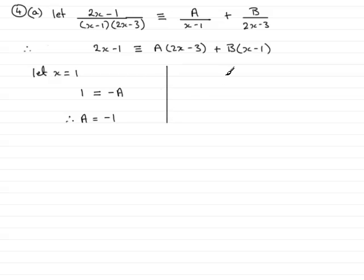We now want to find out what B is, and we can do that by making this bracket go to 0, and that would mean x would have to be 3 over 2, 1 and a half. So let x equal 1 and a half, or 3 over 2, and if we do that, then 1 and a half times 2 is 3, 3 take away 1 is 2, so we have 2 equals, this bracket goes to 0, so 0 times A is nothing. Over here we have 3 over 2, or 1 and a half take away 1, which is a half, half times B is just a half B, or B over 2. Multiplying both sides by 2 gives 4 equals B, or B equals 4.